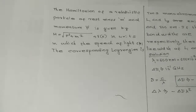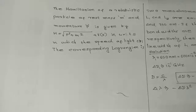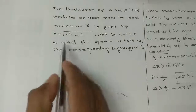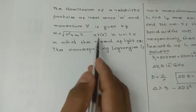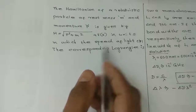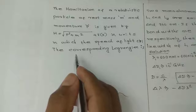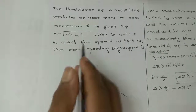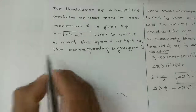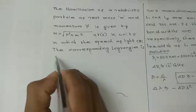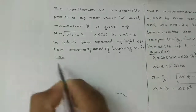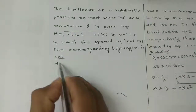Next problem: The Hamiltonian of a relativistic particle of rest mass m and momentum p is given by H equals the square root of p squared plus m squared plus V of x, in units in which the speed of light c equals 1. The corresponding Lagrangian is to be found.